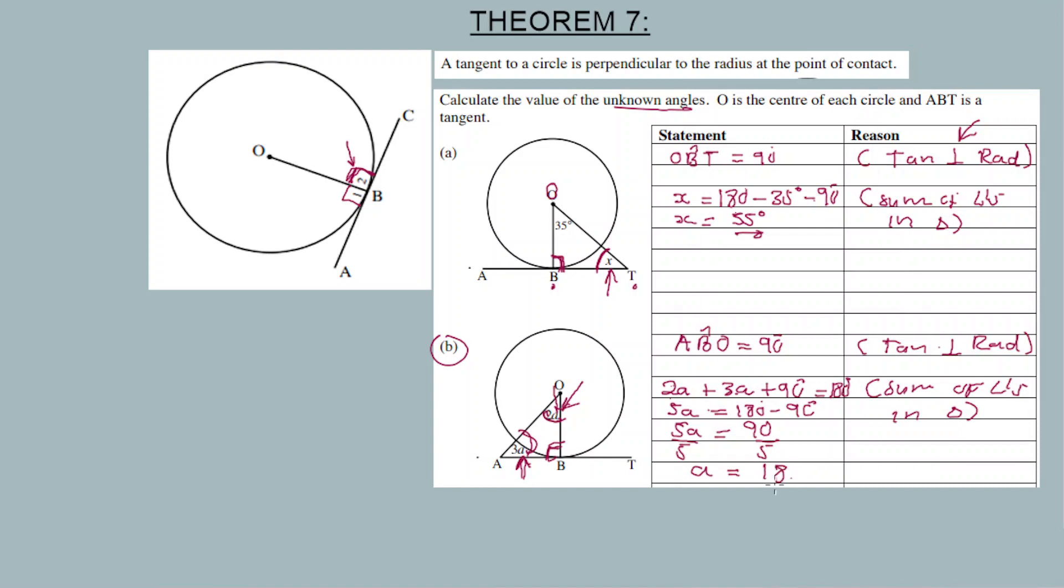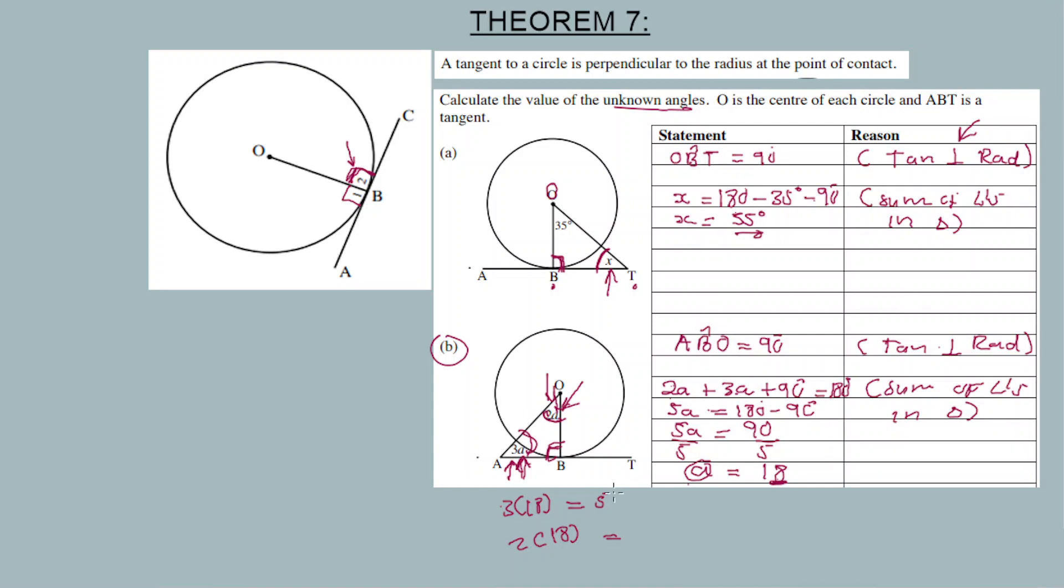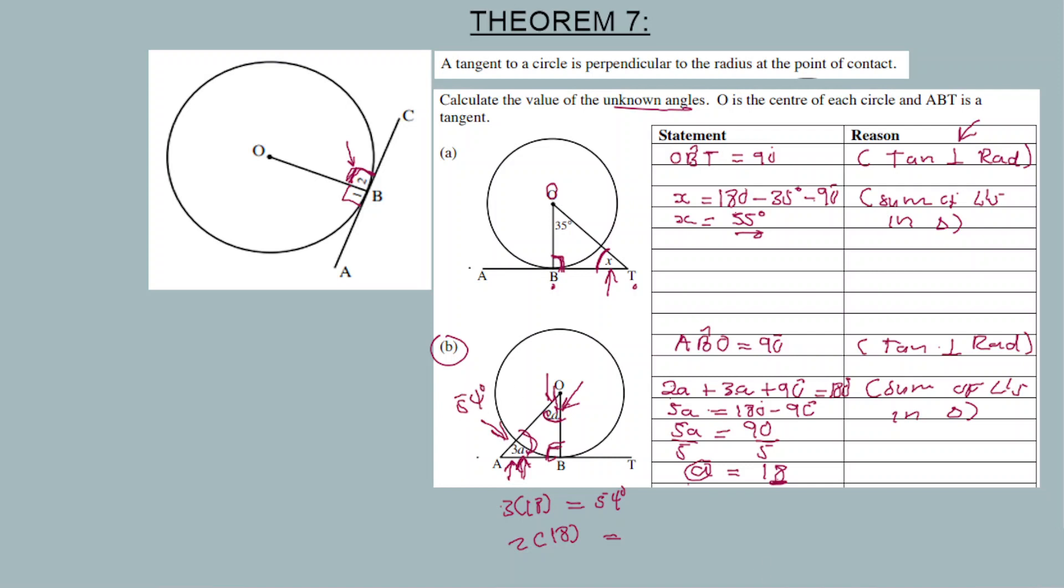So A equals 18. Now 3 times 18, you're gonna get 54. So the angle is 54 degrees, and then 2 times 18 is 36 degrees.